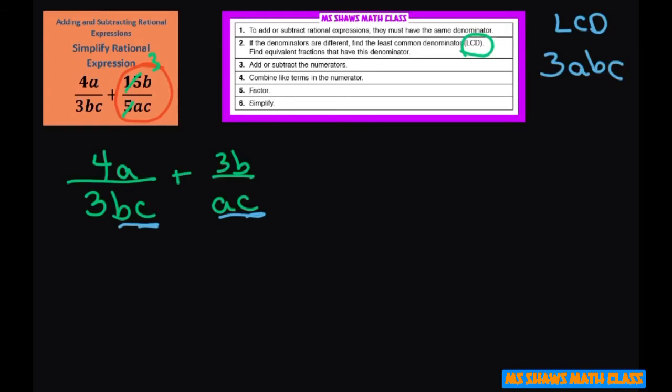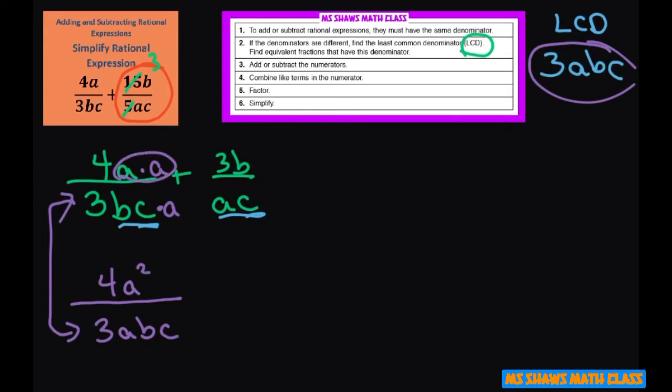So now that we have our LCD, let's look at that. We have 4a and we want to put this over 3abc. Compare these and what we're missing is a. So I need to multiply this by a to get my new denominator. So you also have to multiply the numerator by a. This is going to be a times a, which is a squared, plus...